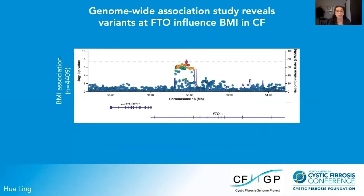We sought to use the CF Genome Project data to identify these genetic modifiers. Similarly to what we did for CFRD and MI, we conducted a genome-wide association study for BMI-Z scores. As a result, we found a series of variants within the FTO gene that associate with BMI with genome-wide significance. Interestingly, these same variants are also associated with BMI in the general population with the same direction of effect, and it's interesting that it continues to operate in people who have CF.